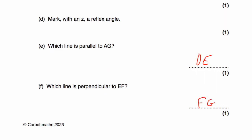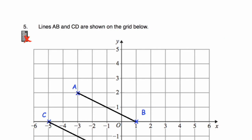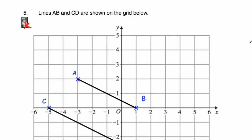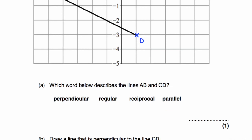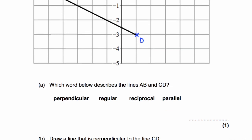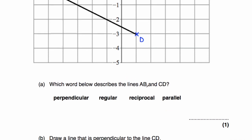Question number five: the lines AB and CD are shown on the grid. They are parallel lines — going in the same direction and they'll never meet each other. The question asks which word describes lines AB and CD. They are parallel.